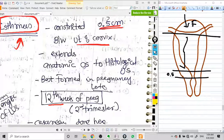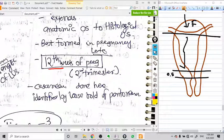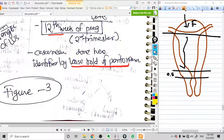When the isthmus part of the uterus is stretching, the serosa, meaning the peritoneum above this part, gets looser. So when we do a cesarean section in a patient, we identify the isthmus by the loose fold of peritoneum. This you will learn when we do the cesarean section lecture.